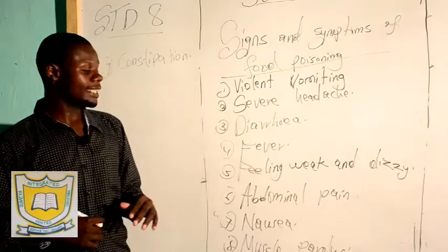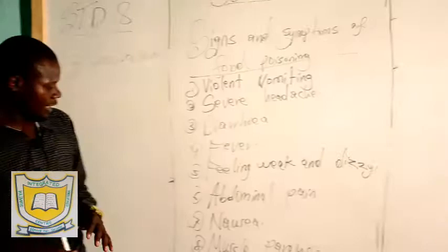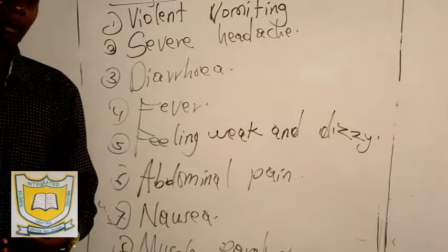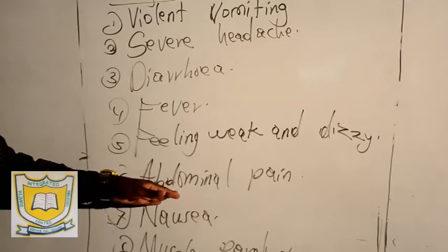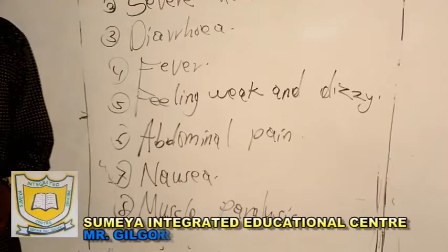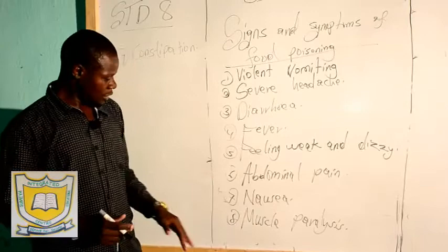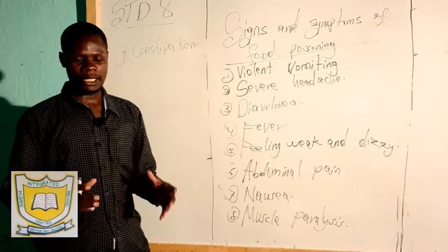Number five, the person will obviously be weak and dizzy. Number six, abdominal pain or stomach ache — because the stomach has been affected, the person will complain of severe abdominal pain. Number seven, the person will also feel nausea. What is the meaning of nausea? It means that the person will feel like vomiting — as if you want to vomit but nothing is coming out. Then we have muscle paralysis: some parts of the muscle will not function properly when the person has consumed the poison.